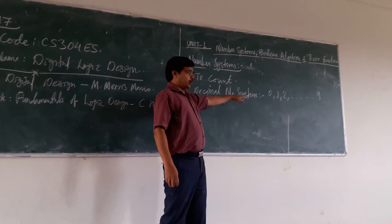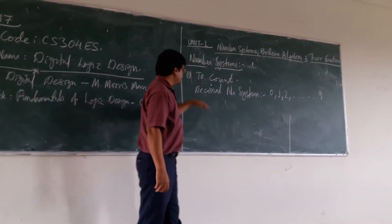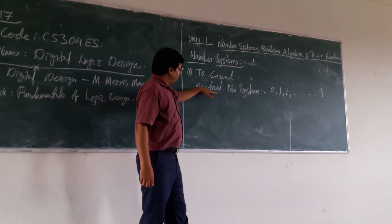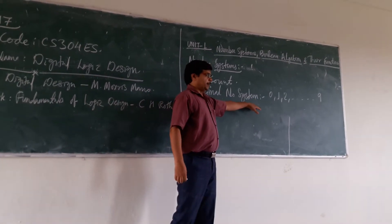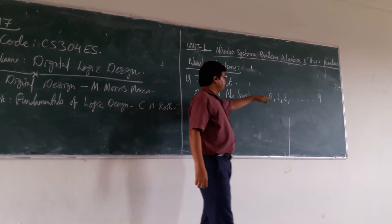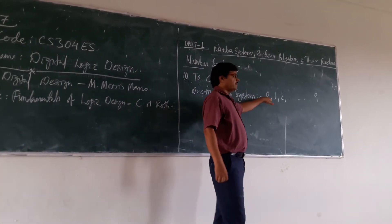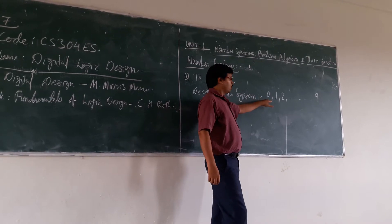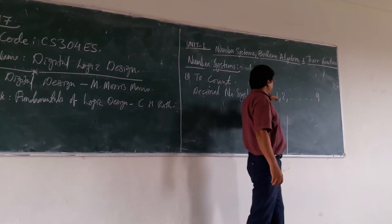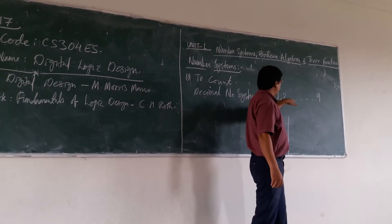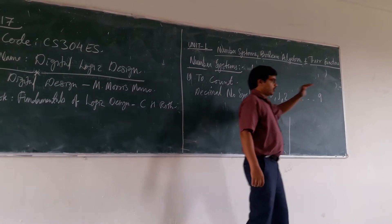We are going to look at the decimal number system. The decimal number system starts from 0. So, 0 to 9 is there: 0, 1, 2, 3, 4, 5, 6, 7, 8, 9.